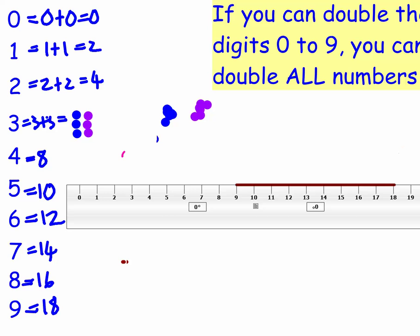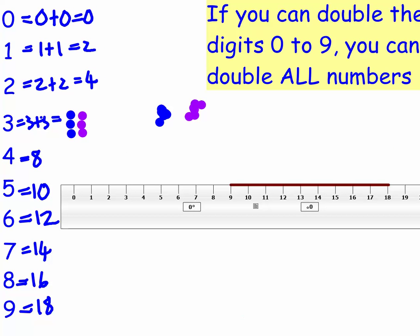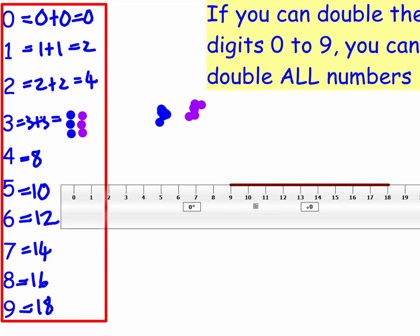And why that's great is because once you've mastered and can write these out every time, don't worry if you don't memorise them, just use that ruler and make sure you can get them. Then I can double any number because all numbers use the digits 0 to 9. There aren't any other digits except 0 to 9, so if you can double these digits, you can double any number.